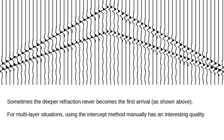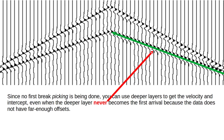Sometimes the deeper refraction never becomes the first arrival. For multi-layer situations, using the intercept method manually has an interesting quality: since no first break picking is being done, you can use deeper layers to get the velocity intercept even when the deeper layer never becomes the first arrival, because the data does not have far enough offsets.